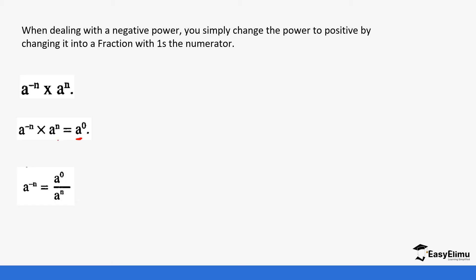If you work it out — for example, if you divide both sides by a power n — you end up having a power zero divided by a power n. We know that a power zero is the same as one. That's why we end up having one over a power n.